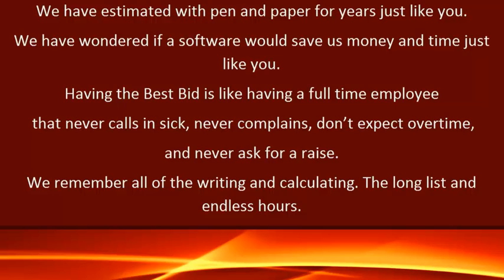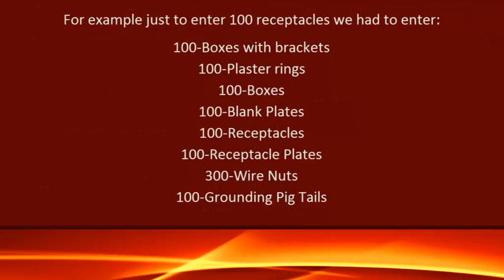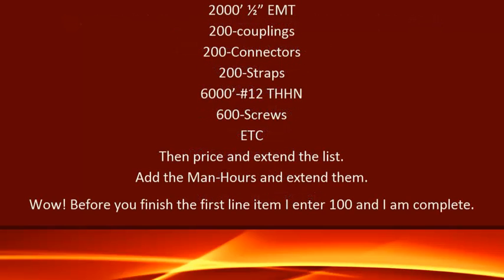We remember all of the writing and calculating, the long lists and endless hours. For example, just to enter 100 receptacles, we had to enter 100 boxes with brackets, 100 plaster rings, 100 boxes, 100 blank plates, 100 receptacles, 100 receptacle plates, 300 wire nuts, 100 grounding pigtails, 2,000 feet of 1.5-inch EMT, 200 couplings, 200 connectors, 200 straps, 6,000 feet of number 12 THHN, 600 screws, etc. Then price and extend the list, add the man hours and extend them. Before you finish the first line item — I entered 100 and I am complete.